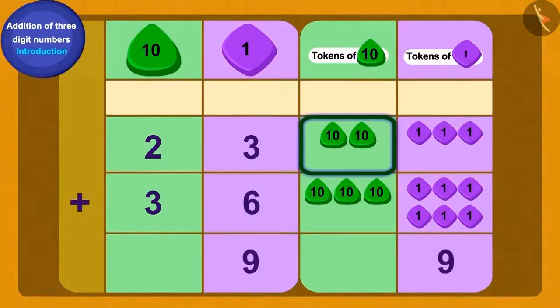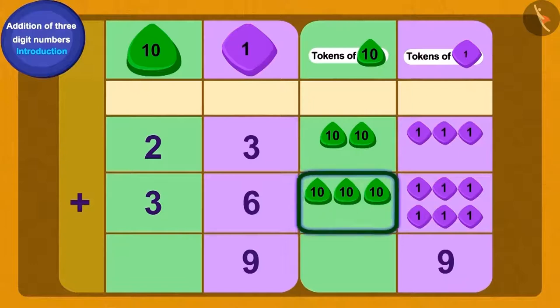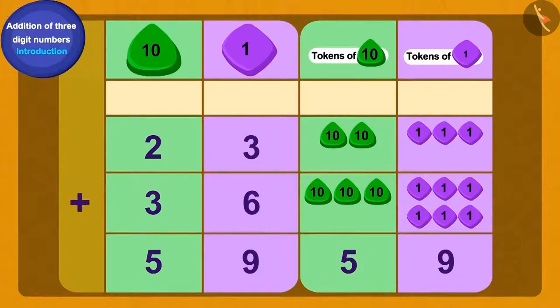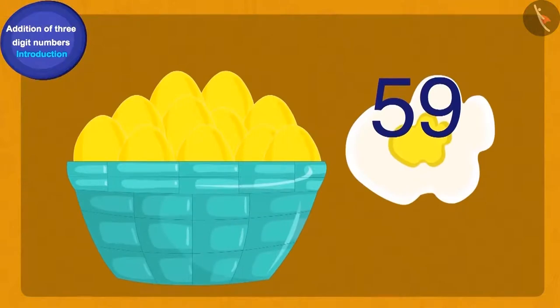Now if we add two ten tokens and three ten tokens, how many do we get? Perfect! Five of ten tokens. Thus, Baban had a total of fifty-nine gold eggs.